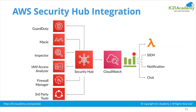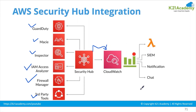Security Hub can be integrated with more than just those three services. It integrates with GuardDuty, Macie, Inspector, IAM Access Analyzer, and Firewall Manager — which includes AWS WAF. You can also integrate third-party security tools and visualize their data in Security Hub. All this data flows into Security Hub, and from there it can be sent to CloudWatch, where you can set up notifications, trigger a Lambda, or take a SIEM action.